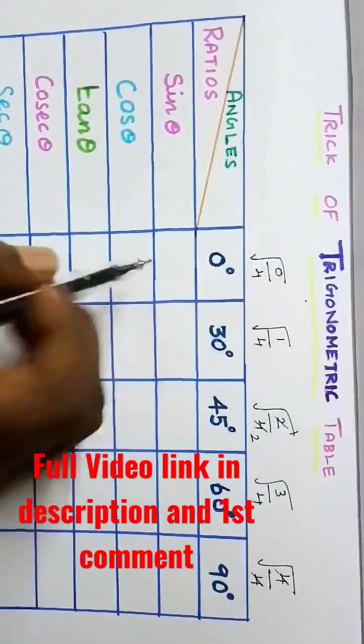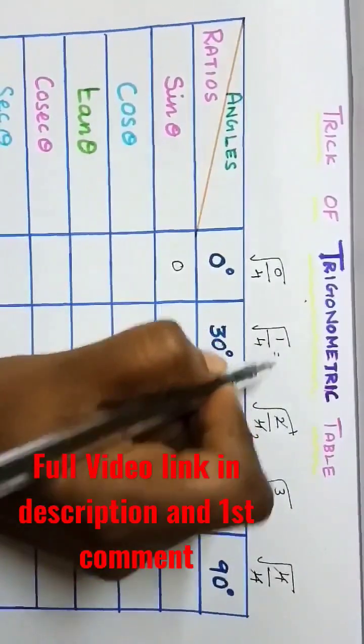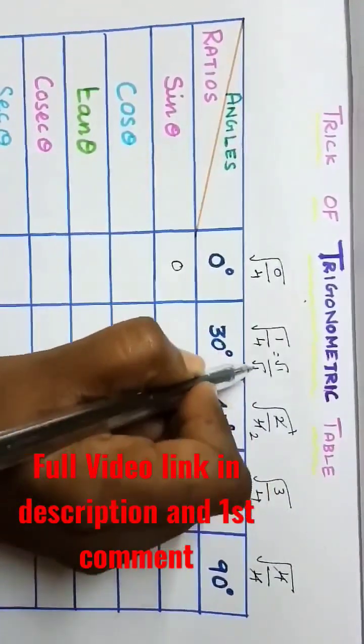0 by 4 is 0 itself, so write 0 here. Next, square root of 1 by square root of 4, that is 1 by 2.